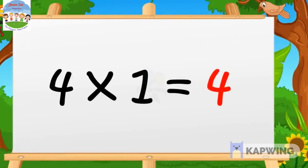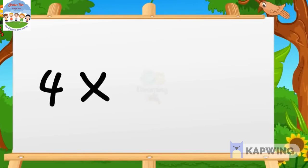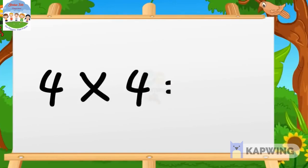Four ones are four, four ones are four. Four twos are eight, four twos are eight. Four threes are twelve, four threes are twelve.